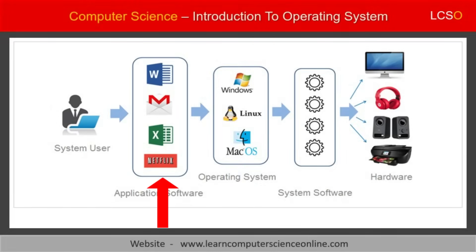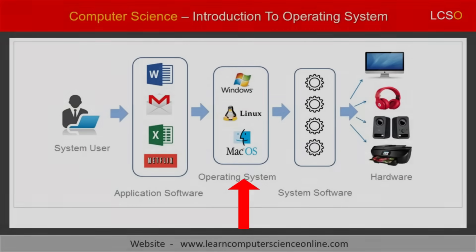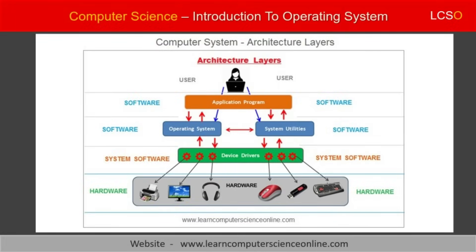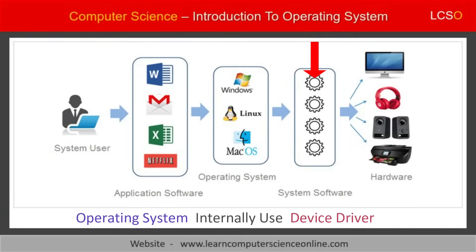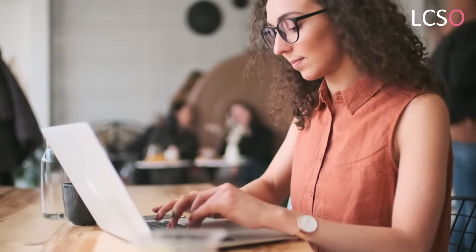For example, a computer user might use the Microsoft Word program to create a text document. In some cases, the user might also want to use the printer connected to the system for taking the printout of the document. However, the application program used by the user cannot directly communicate with the computer hardware. Therefore, in order to communicate with hardware, the application program needs the operating system to communicate with the hardware device. The operating system internally makes use of another piece of system software called the device driver. It is the device driver software that internally communicates with various hardware components to execute various operations to be performed by the hardware. For example, when the user executes the print command through an application software, the operating system internally uses the printer device driver to execute the print command.